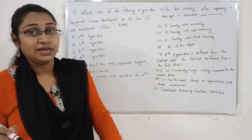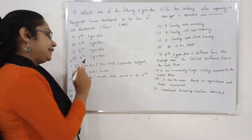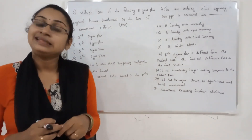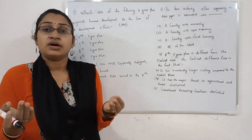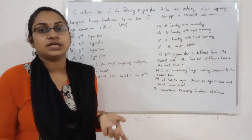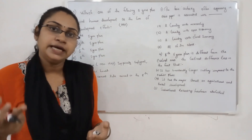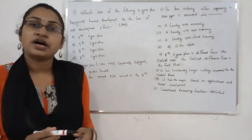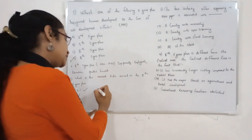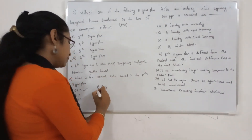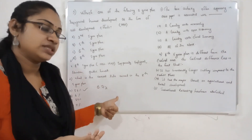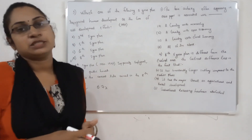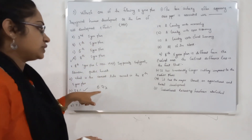To answer the question: what is the annual growth rate aimed in the 8th Five Year Plan? The aim was to achieve a target of 5.6%, and the actual growth achieved was 6.7%. These two figures have been asked twice in previous UPSC questions.